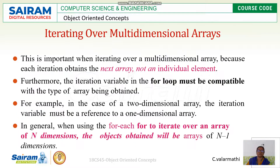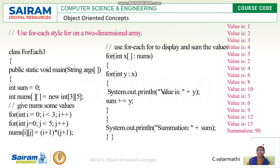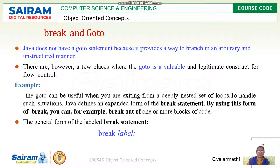Iteration over a multi-dimensional array is important because the next element is in the next array, not individual elements. For example, a two-dimensional array nums with row size 3 and column size 5, using two for loops with i++ and j++. Values start from 1 and increment up to 10 as the loops execute.